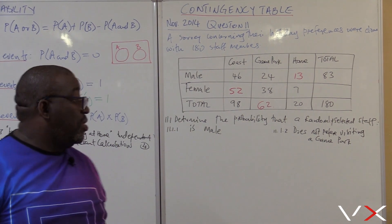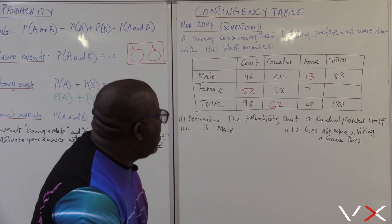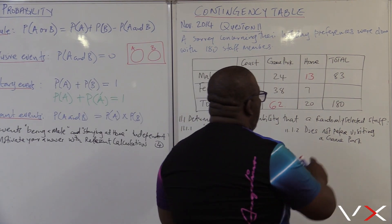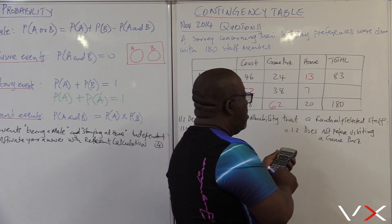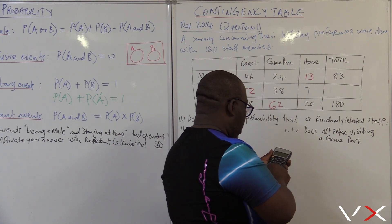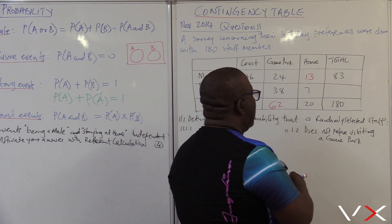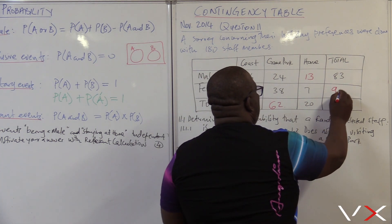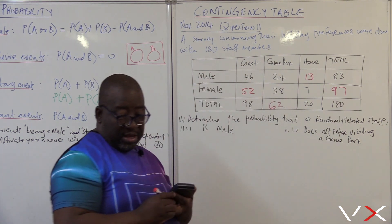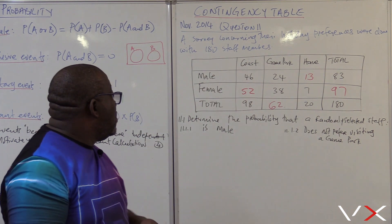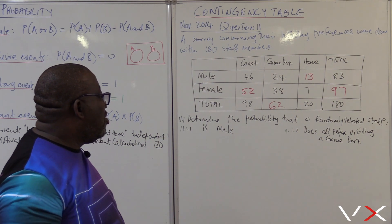There's something missing: 180 minus 83 gives me 97. So this should be 97, and when I add this way I must get to the very same answer, which is 97. Right — determine the probability that a randomly selected staff member is a male.